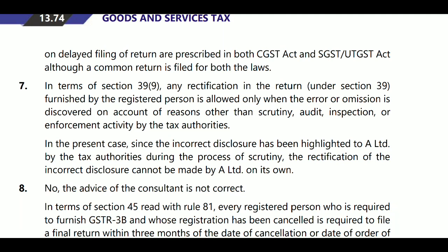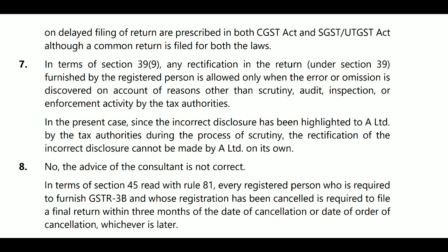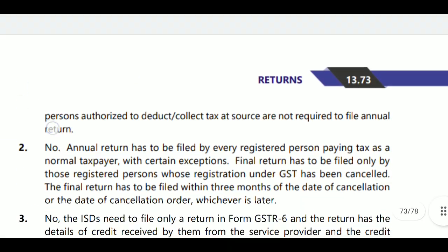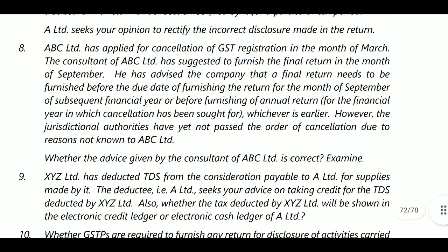In terms of Section 39, any rectification in the return furnished by the registered person is allowed only when the error or omission is discovered on account of a reason other than scrutiny, audit, inspection, or enforcement activity by the tax authorities. In the present case, the incorrect disclosure was highlighted to A Limited by the tax authorities during the process of scrutiny. Therefore, the rectification of incorrect disclosure cannot be made by A Limited on its own.